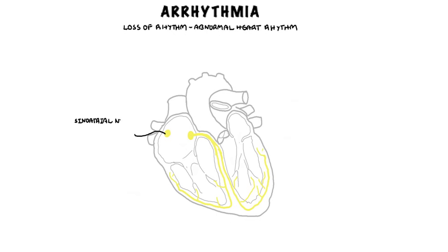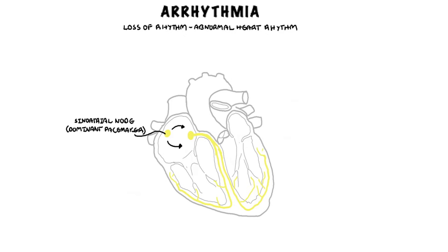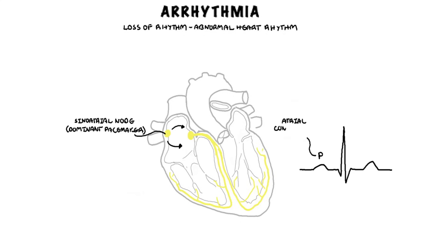The sinoatrial node is a dominant pacemaker and initiates an impulse and causes contraction of the atrial myocardium. As the atrium is depolarized, a P wave is transcribed on the surface ECG. After atrial contraction, the impulse reaches the AV node, or the atrioventricular node.